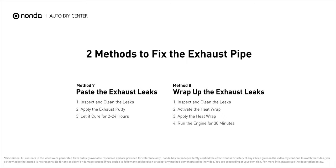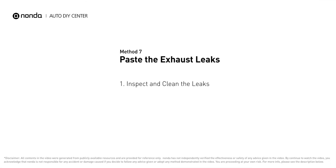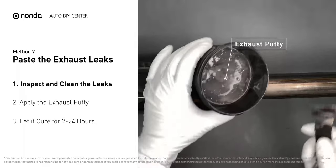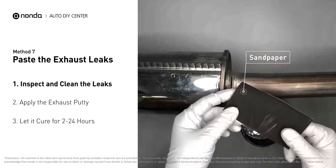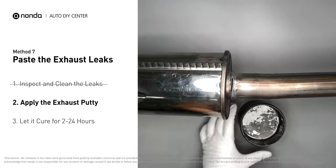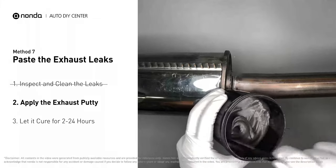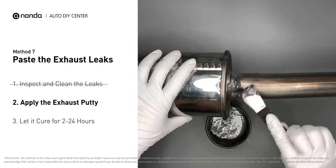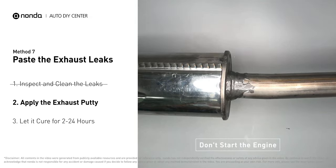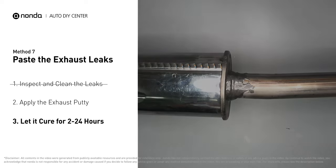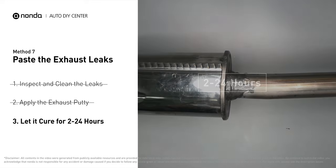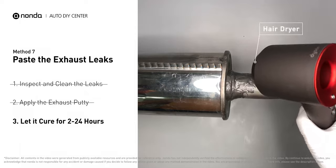Here are two methods to repair the exhaust pipe. Method 7: Paste the exhaust leaks. If you have a leak around a corner, get some exhaust putty to seal it up. First, use sandpaper and a wet wipe to clean the leaking area for better application. Stir the paste well to activate it, then apply and press it to seal the leaking area. After application, don't start the engine — the positive pressure from the exhaust will blow out the paste. Let it cure for 2 to 24 hours depending on external temperature; the hotter it is, the quicker it cures. You can use a hair dryer to heat it up and make it cure faster.